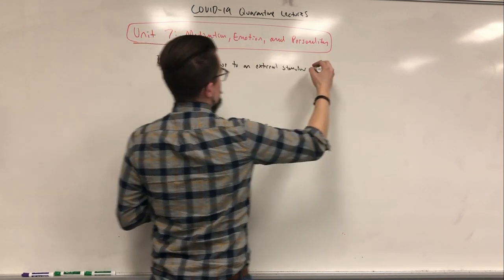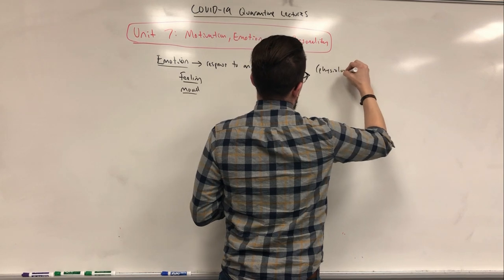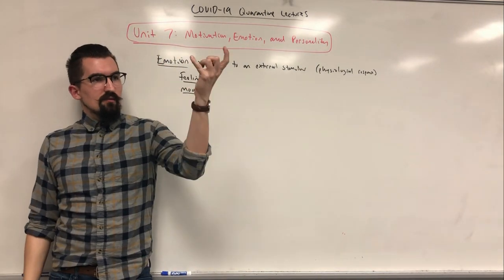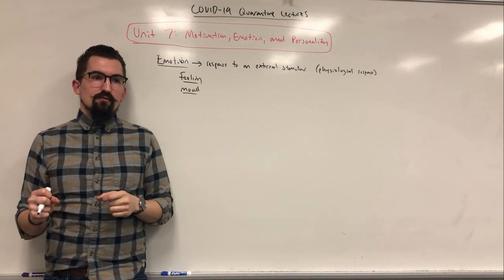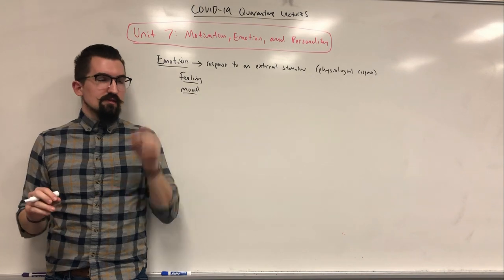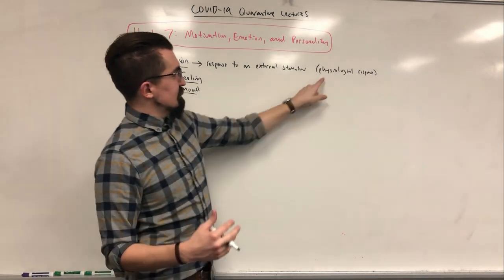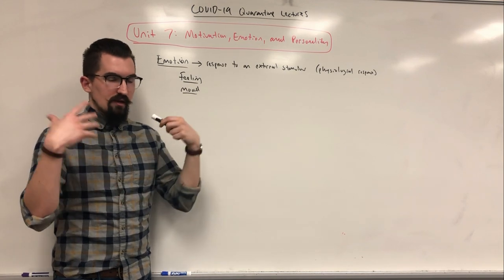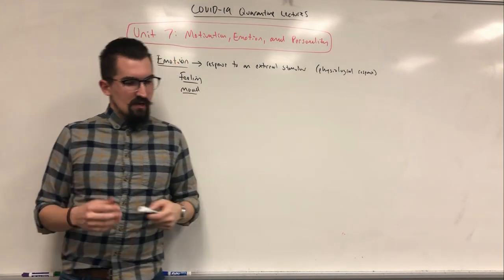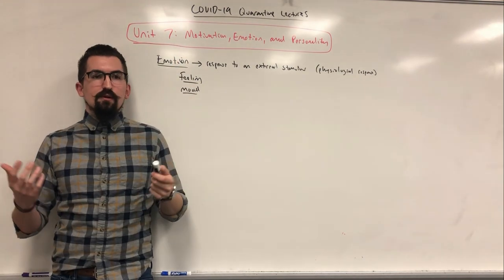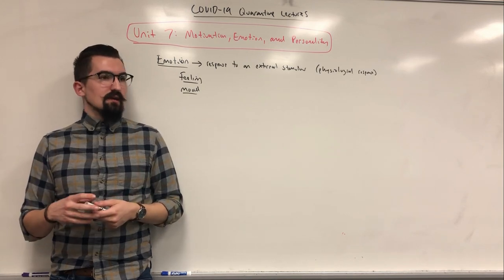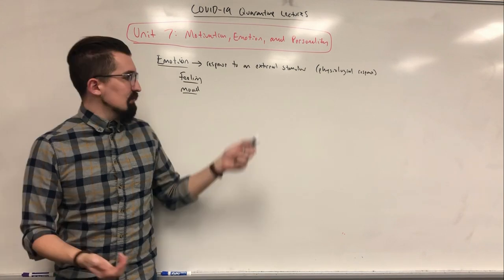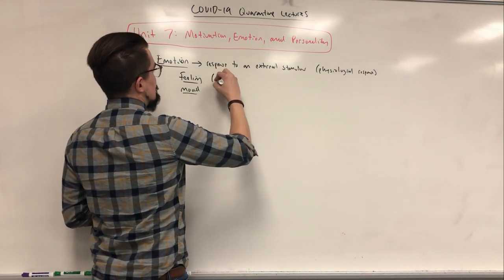When I say response, I generally mean a physiological response. Something happens or you think about something, and then what occurs — that's the emotion — it's that automatic physiological response to whatever the stimuli is. Then what happens is you have a physiological surge of different neurochemicals, most of them related to arousal, so it's going to be norepinephrine and epinephrine related generally. You experience this autonomic increase, your sympathetic nervous system heightens, your heart rate increases, you're more alert.